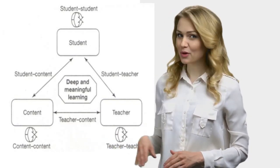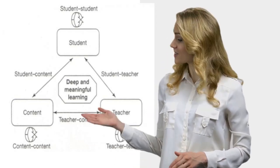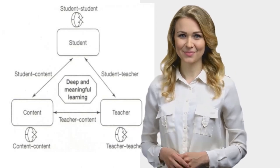But wait, there's more. Terry Anderson, another important researcher in online education, decided to take Moore's model a step further by identifying six possible components.